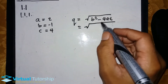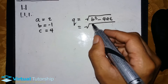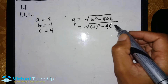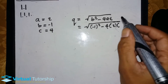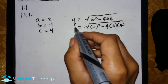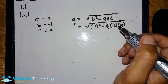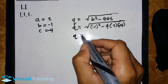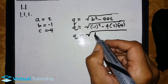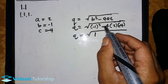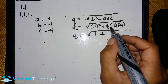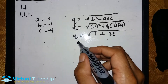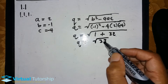We substitute the values of B, A, and C. B is minus 1, A is 2, and C is minus 4. So Q is equal to the square root of minus 1 squared — that's 1 — negative 4, negative times a negative is a positive, 4 times 4 is 16, times 2 is 32. So Q is equal to the square root of 33.